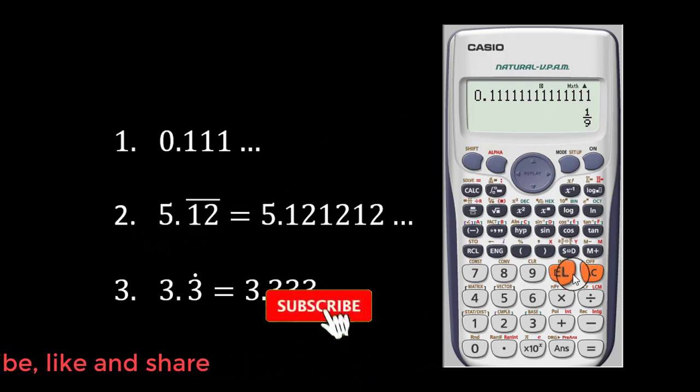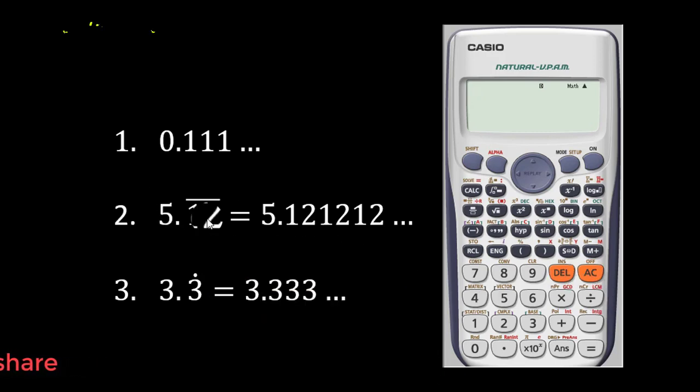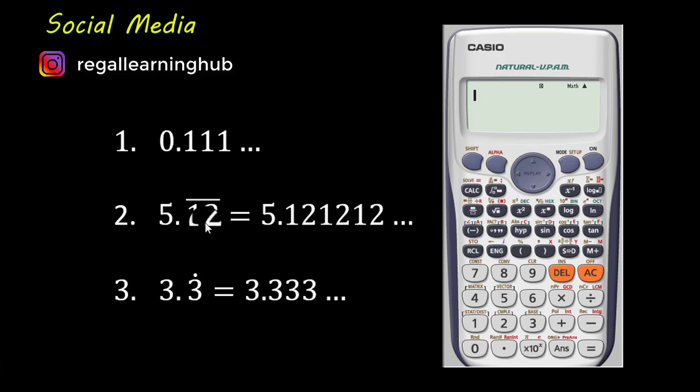Now, let's come to the second question. Let me press the all-clear key. The second example is simply the same as the first one. It's just that this time, two numbers are recurring. When you see the bar at the top here, it means the twelve is recurring. So it's just another way of writing 5.1212121212, of course, going.